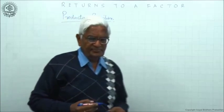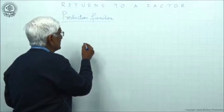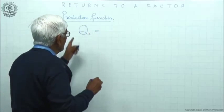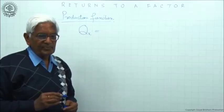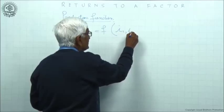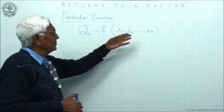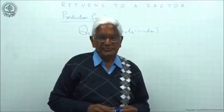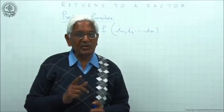We have just seen the meaning of production function — the relation between input and output. Mathematically, it is represented like this: Q of X is a function of input 1, input 2, ... input N. Here Q means the quantity of output produced, X refers to the commodity. If there are 4 inputs then N will be 4; if there are 10 inputs then N will be 10. This is the general form of production function.